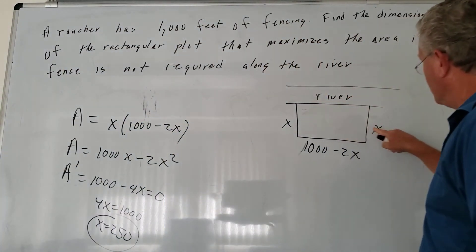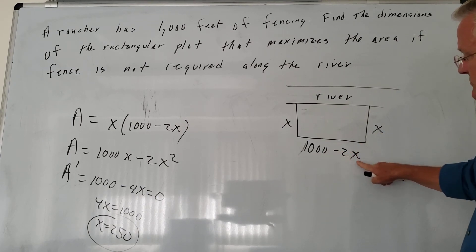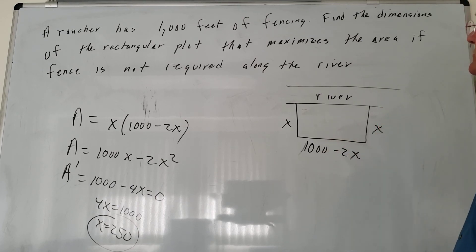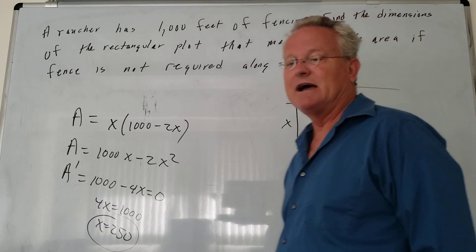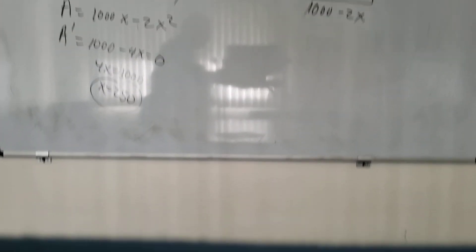The dimensions that will maximize the area are 250 by 1,000 minus twice 250, so it's 250 by 500. These dimensions maximize the area inside the fenced pasture.